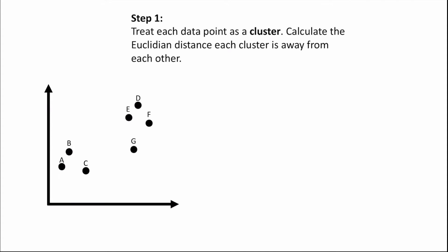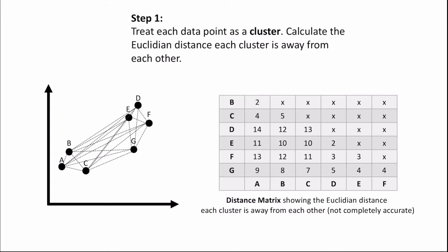The way this algorithm works is: firstly, we treat each data point as a cluster. We then calculate the Euclidean distance each cluster is away from each other. Euclidean distance is simply the straight line distance between two points. These distances are recorded in what's called a distance matrix. Note that the distances shown here are rough approximations just to demonstrate how the algorithm works.